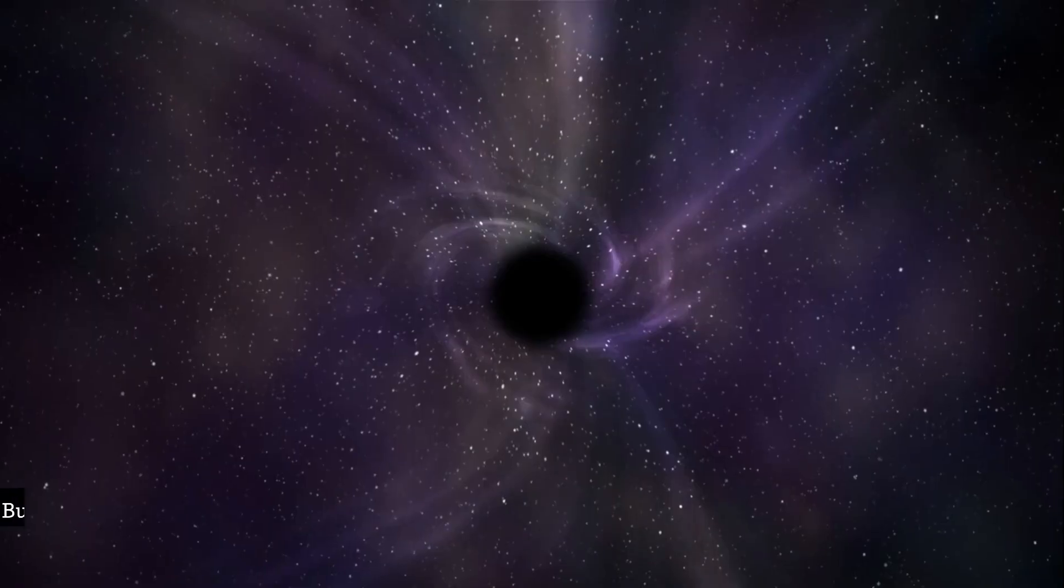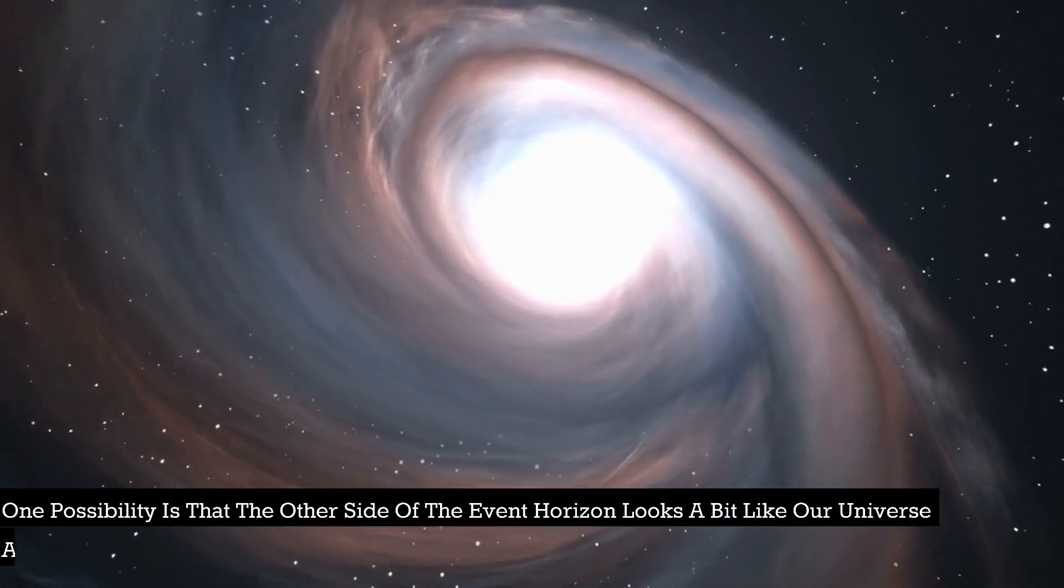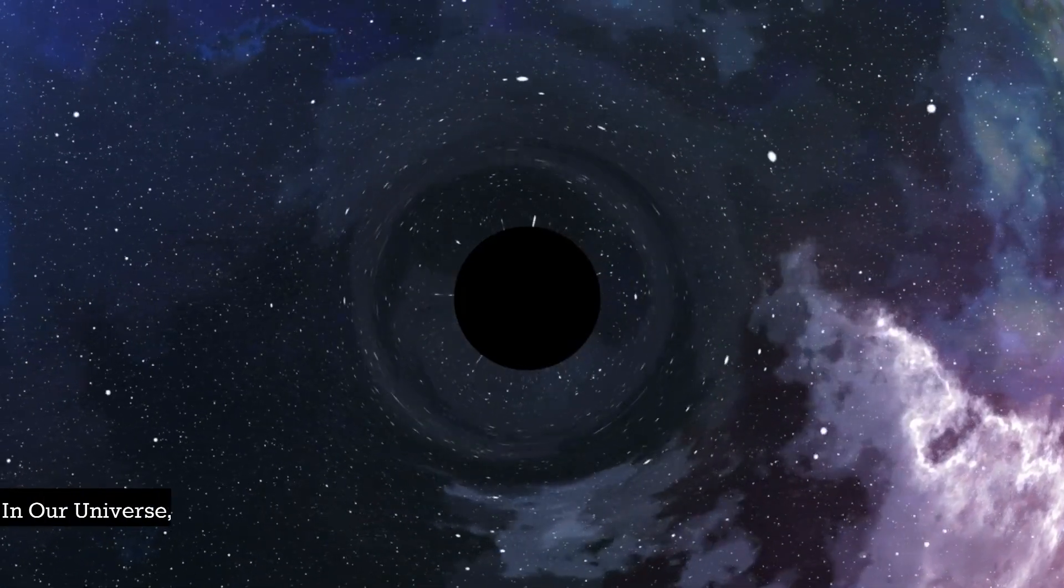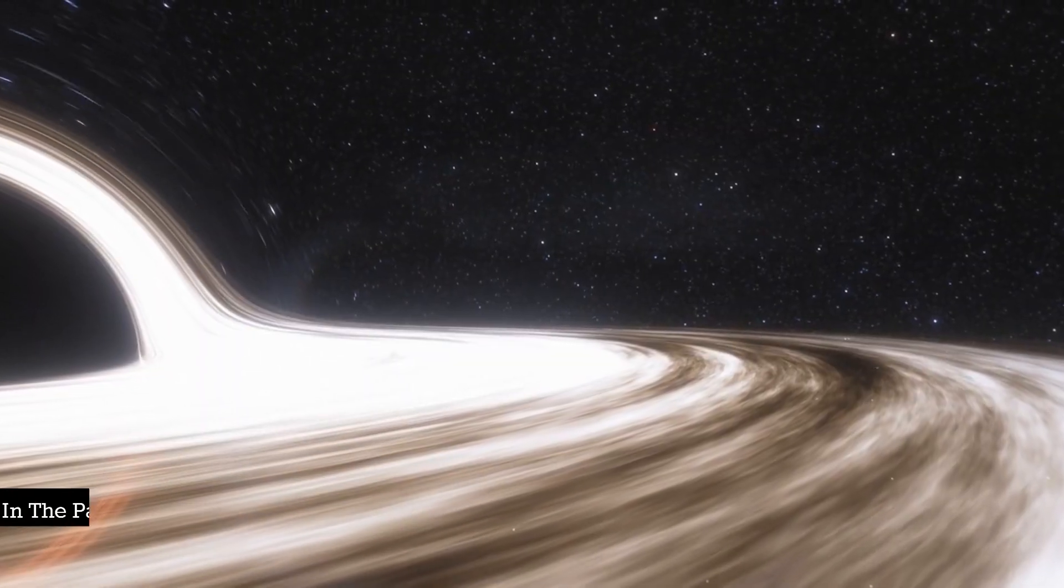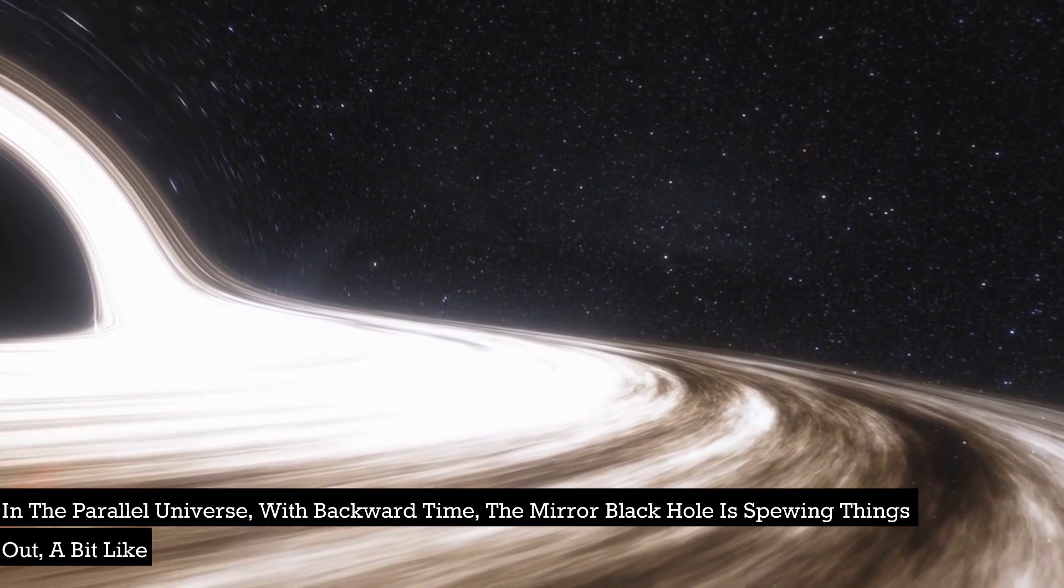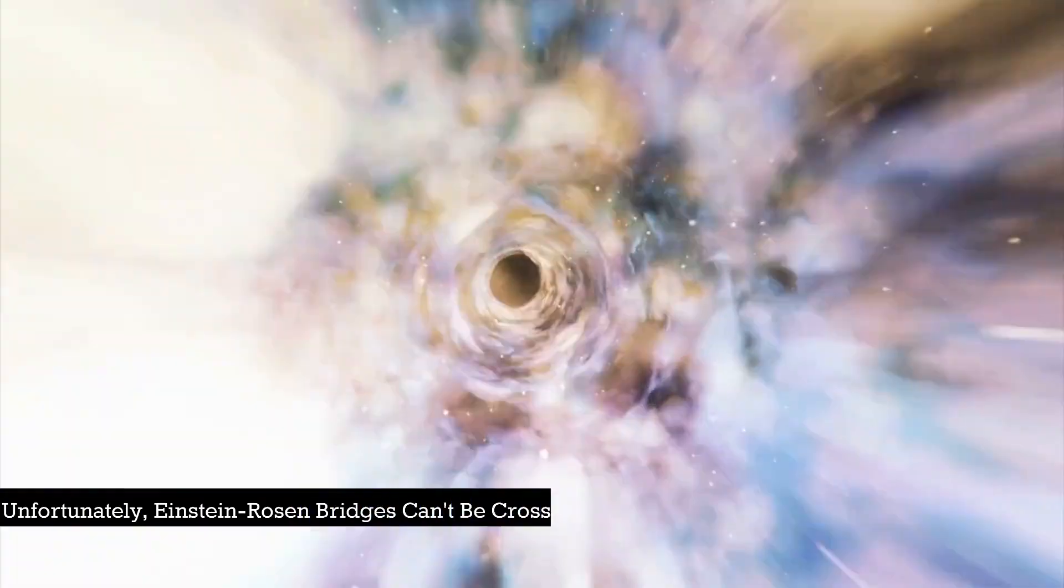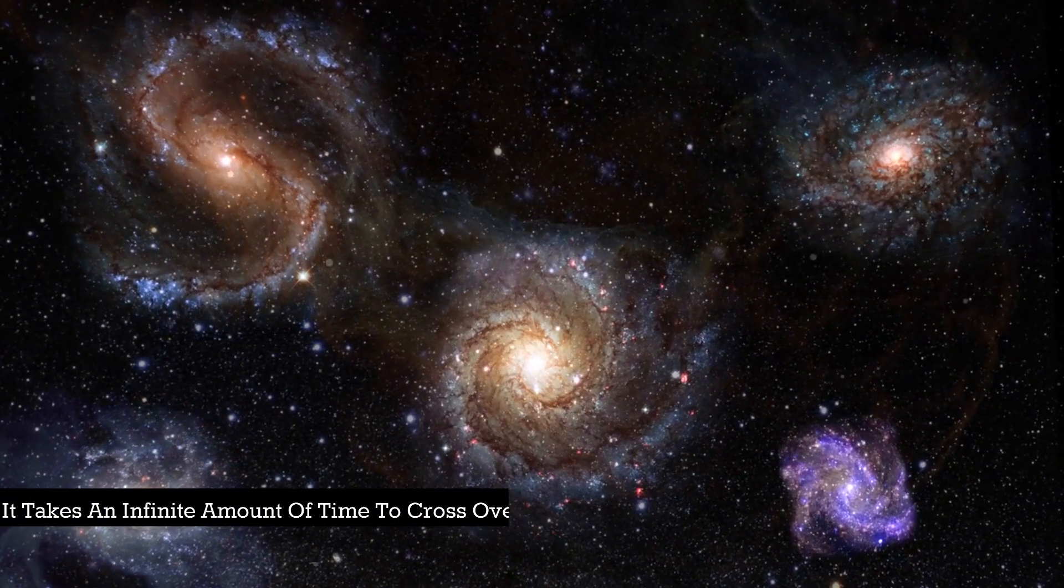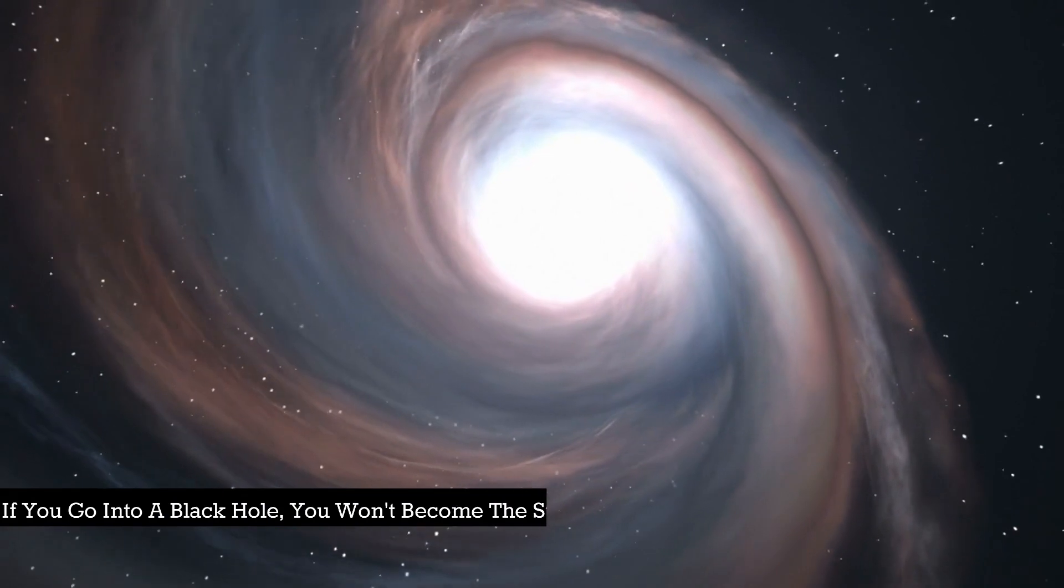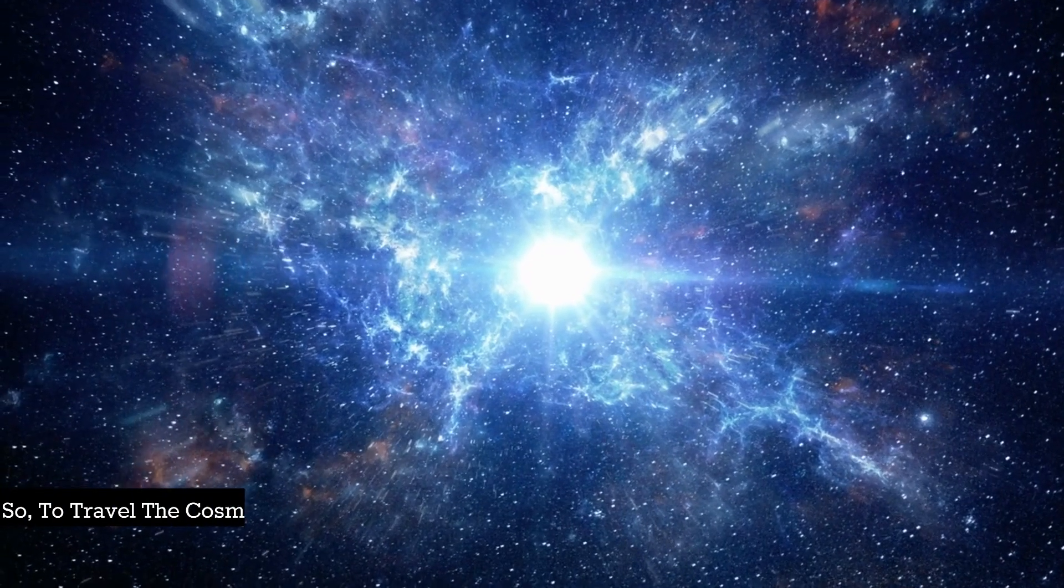But maybe there is no singularity here. One possibility is that the other side of the event horizon looks a bit like our universe again, but mirrored upside down where time runs backward. In our universe, things fall into the black hole. In the parallel universe with backward time, the mirror black hole is spewing things out, a bit like a Big Bang. This is called a white hole. Unfortunately, Einstein-Rosen bridges can't be crossed. It takes an infinite amount of time to cross over to the opposite universe, and they crimp shut in the middle. If you go into a black hole, you won't become the stuff coming out of the white hole - you'll only become dead. So to travel the cosmos in the blink of an eye, humans need a different kind of wormhole - a traversable wormhole.